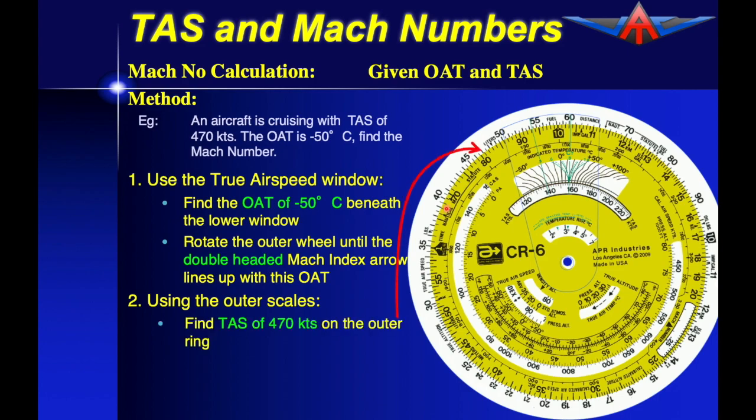First thing is to find the true airspeed of 470 knots on the outer scale. We read the Mach number beneath this value of 470 and we get a value of 81. The actual value is not 81 but is a fraction of 1. So Mach 1 would be here so coming back here gives us a value of Mach 0.81.